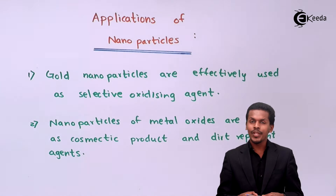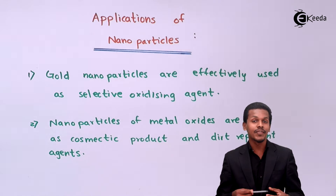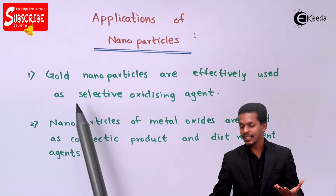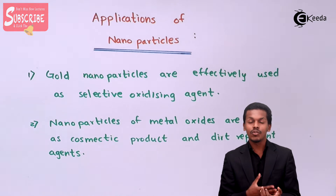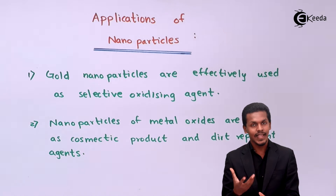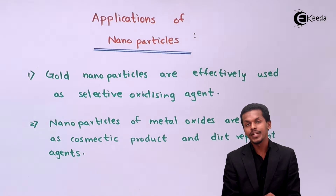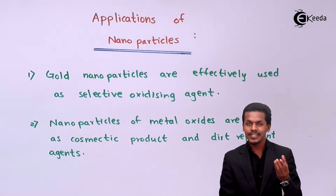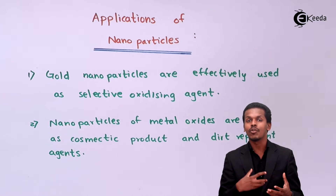Here are the following applications of nanoparticles that we are going to talk about. Starting with the first one: gold nanoparticles are effectively used as selective oxidizing agents. Because of the small size of these nanoparticles — in the range of 1 to 2 nanometers — they are very effectively used as oxidizing agents.